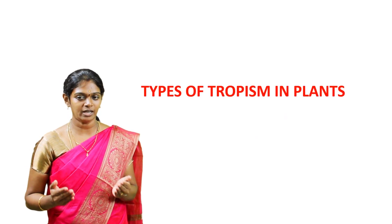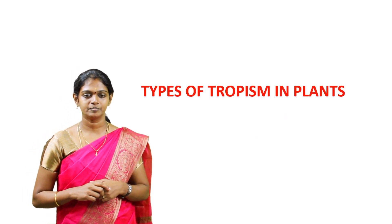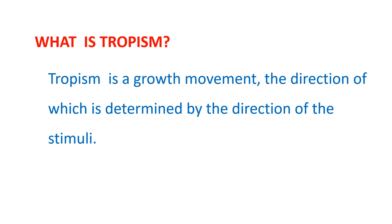In this video, we are going to discuss and learn about the types of tropism in plants. What is meant by tropism? Tropism is a growth movement, the direction of which is determined by the direction of the stimuli.